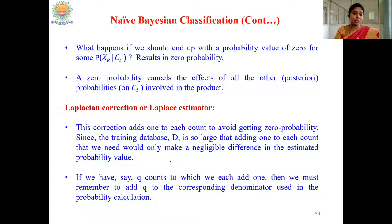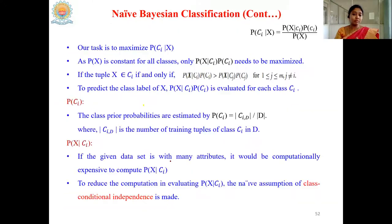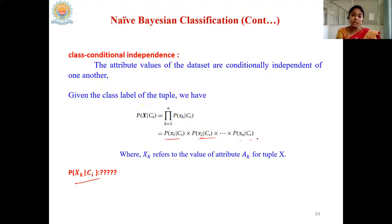Before going to Bayesian belief networks, there is one more leftover topic in Naïve Bayes. What happens if we end up with a probability value of 0 for some P(Xk|Ci)? Where does P(Xk|Ci) appear? It is each individual probability in the product expansion.